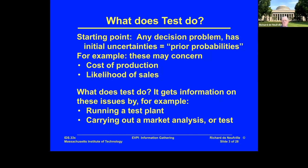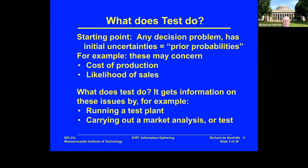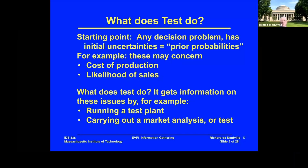A test gets information on these issues. For example, you might think you know how production works in your plant from experience in the States, but now you're setting up in South Africa where conditions are different. You can run a test plant, see how it works with local materials and local engineers. Or you can run a market analysis — test a new product in St. Louis, try a different demographic in San Francisco. There are many things you can do as a company to get more information before committing to a decision.